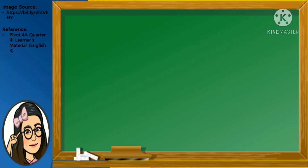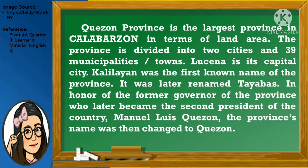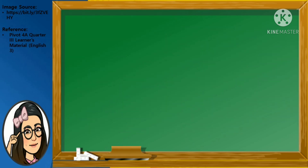Let us have another selection. I am going to read the short selection for you and then you identify what details are asked. Quezon Province is the largest province in Calabarzon in terms of land area. The province is divided into two cities and 39 municipalities or towns. Lucena is its capital city. Calilayan was the first known name of the province. It was later renamed Tayabas. In honor of the former governor who later became the second president of the country, Manuel Luis Quezon, the province name was then changed to Quezon. Did you understand the short selection? Let us see if you do. Here are the questions.